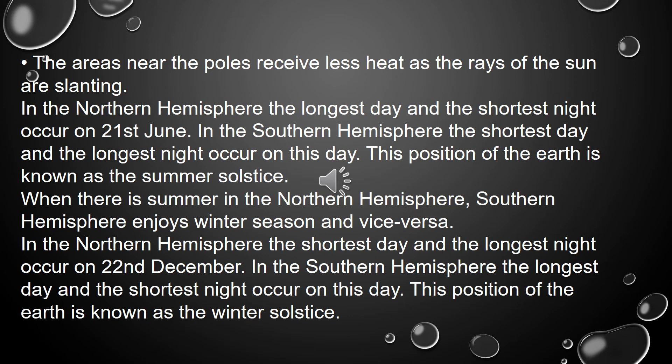In the northern hemisphere, the shortest day and the longest night occur on 22nd December. In the southern hemisphere, the longest day and the shortest night occur on this day. This position of the earth is known as the winter solstice.